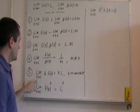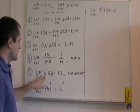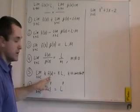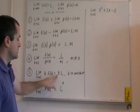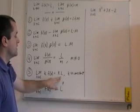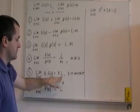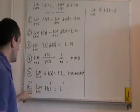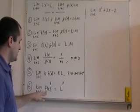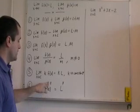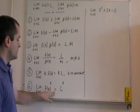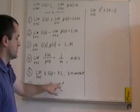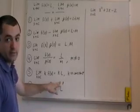Property five: the limit as x goes to c of a constant times a function is equal to the constant times the limit of the function. Property six: the limit as x goes to c of a function to a power is simply equal to the limit of the function raised to the power.